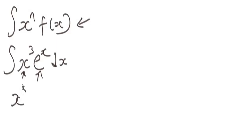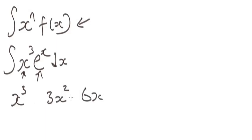Starting with x³: when you differentiate x³ you get 3x², when you differentiate 3x² you get 6x, and when you differentiate 6x you get the constant 6, and differentiating that constant gives you zero.